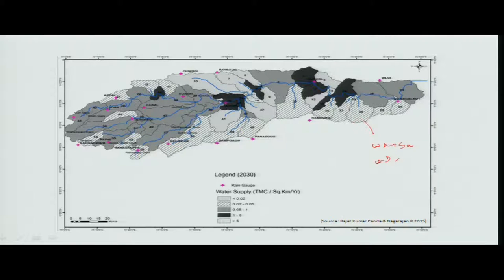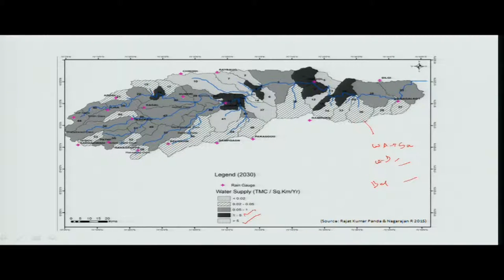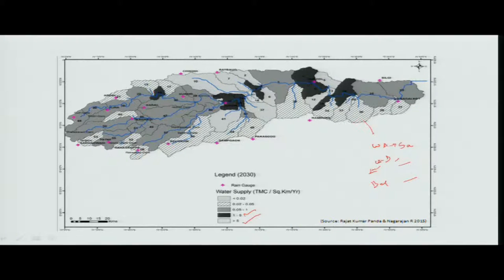So, given what is the supply and what is the demand, how much will be the deficit — that is how this information is derived. It shows there are going to be major problems in some areas. This is for the year 2030. The demand projection is based on a 2–3 decadal growth pattern. The deficit or excess is predicted, with a 0.1 to 1 percentage TMC deduction possible in the gray areas indicated.